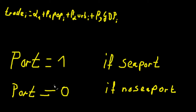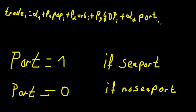So the value is either equal to 1 if there is a seaport, or equal to 0 if there's not a seaport. So let's include that into our model, so the model becomes: plus alpha 2 times whether or not a city has a seaport, and some error term.